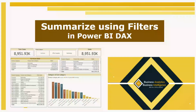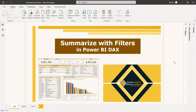Welcome to this video. In this video, we are going to look at summarize with filters. Summarize will actually aggregate the values and summarize them in a new table, or you can keep it as a virtual table. Here we are going to filter the summarize and get a particular dimension from the dimension table and display it in a table.